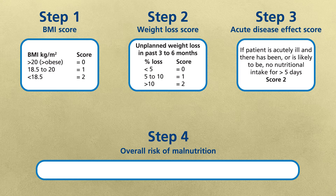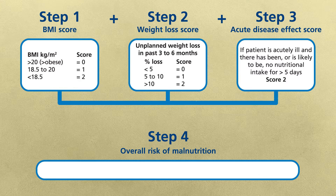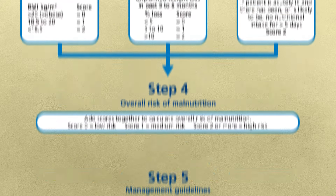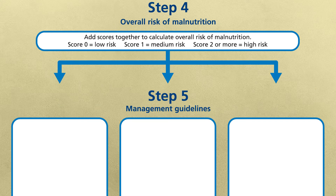Step four: add the three scores together — step one your BMI score, step two your weight loss score and step three your acute disease effect score. This gives an overall score and risk of malnutrition. If the score is zero this indicates a low risk of malnutrition. If the score is one this would indicate a medium risk, and if the score is two or more this indicates a high risk of malnutrition. Step five of the MUST tool indicates the management guidelines you should take to address your patient's risk of malnutrition.